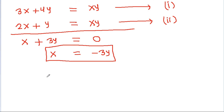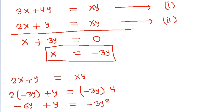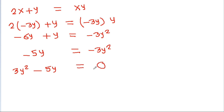And equation 2 is 2x plus y is equal to xy. Substituting x equals minus 3y: 2 times minus 3y plus y is equal to minus 3y times y. And it is minus 6y plus y is equal to minus 3y squared. And it is minus 5y is equal to minus 3y squared. Or it is 3y squared minus 5y is equal to 0.